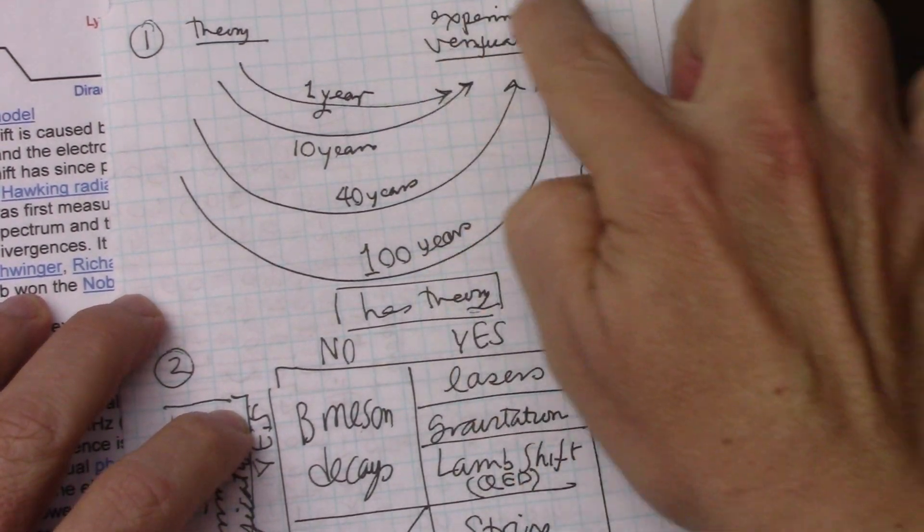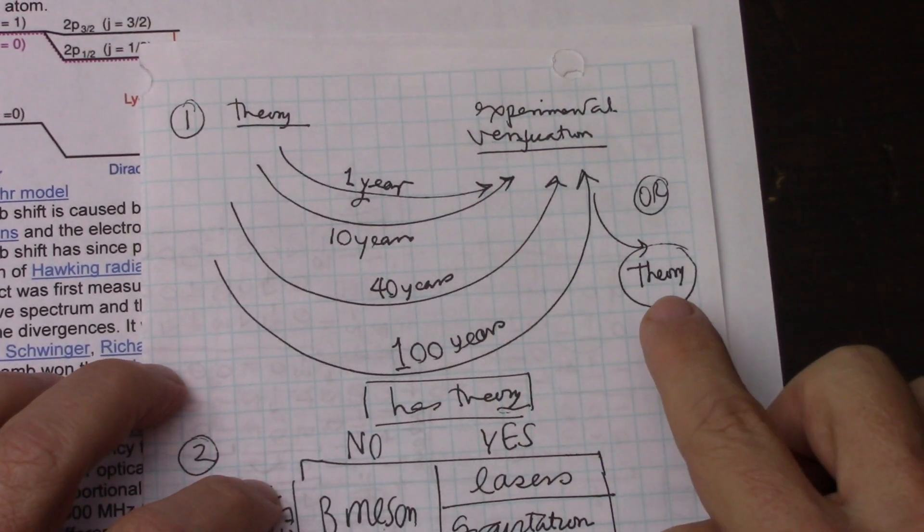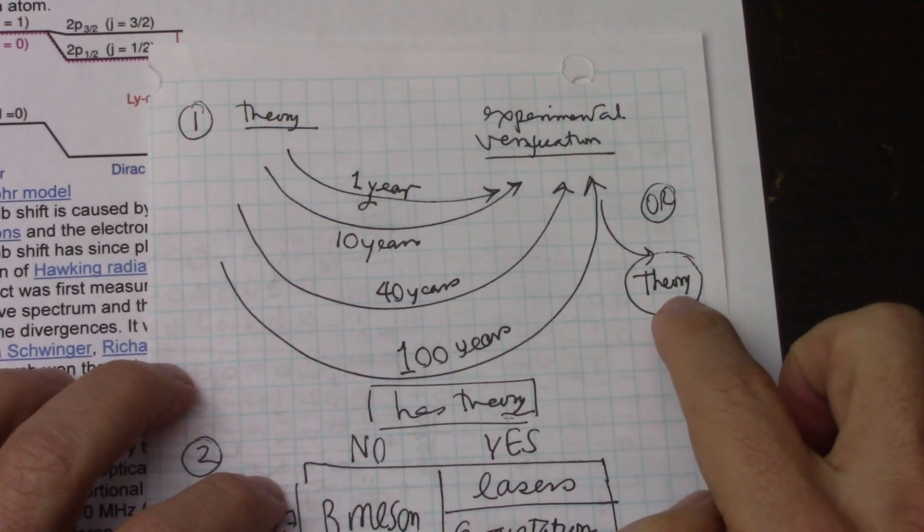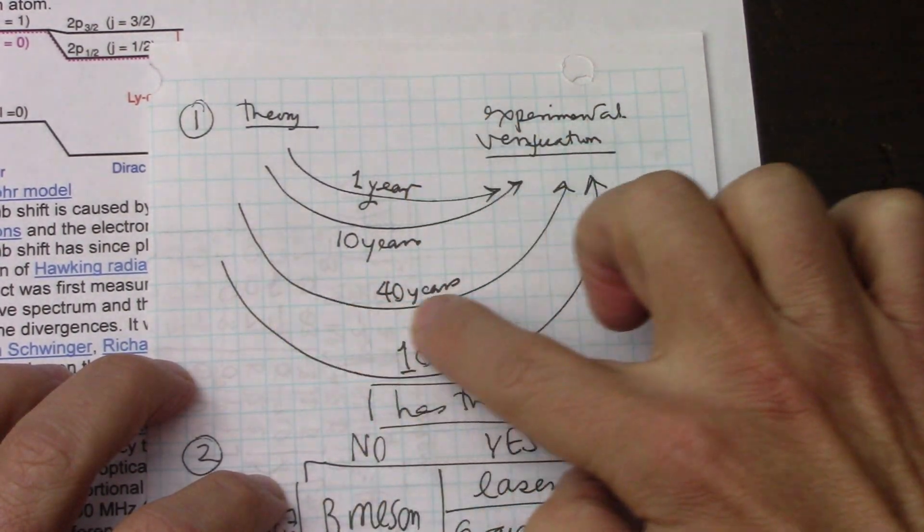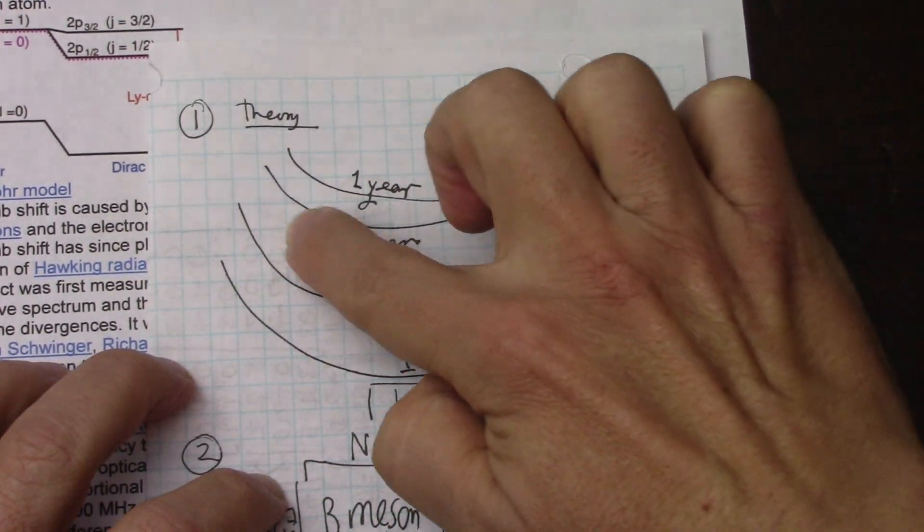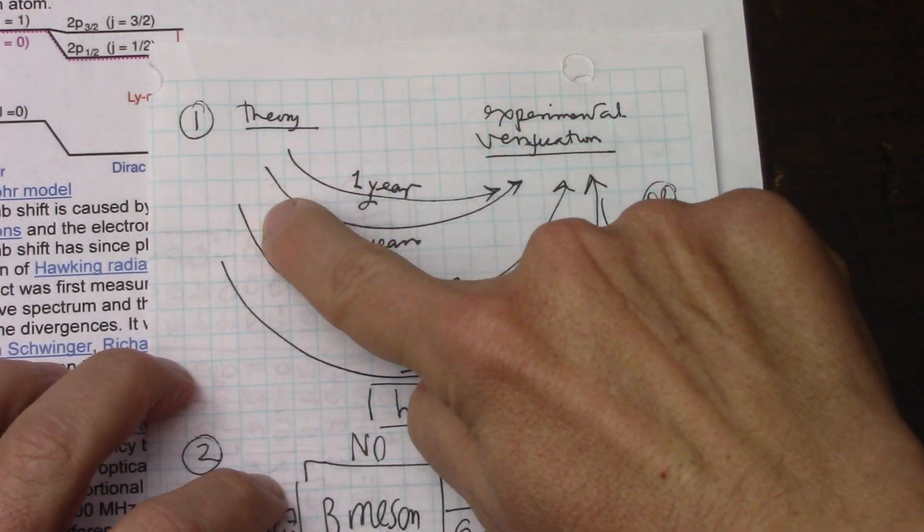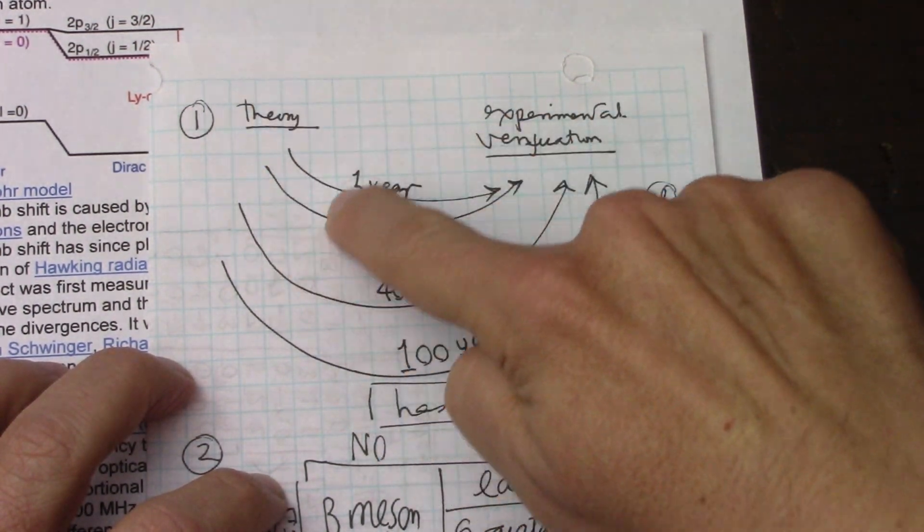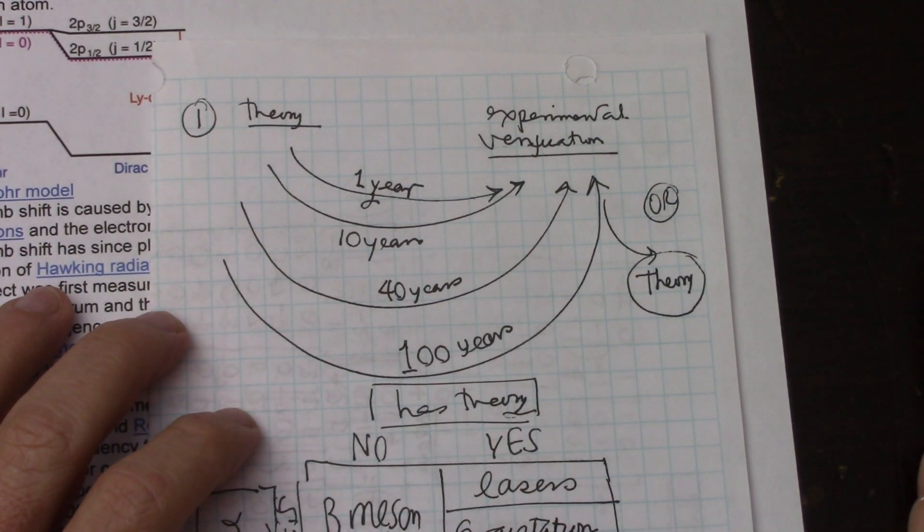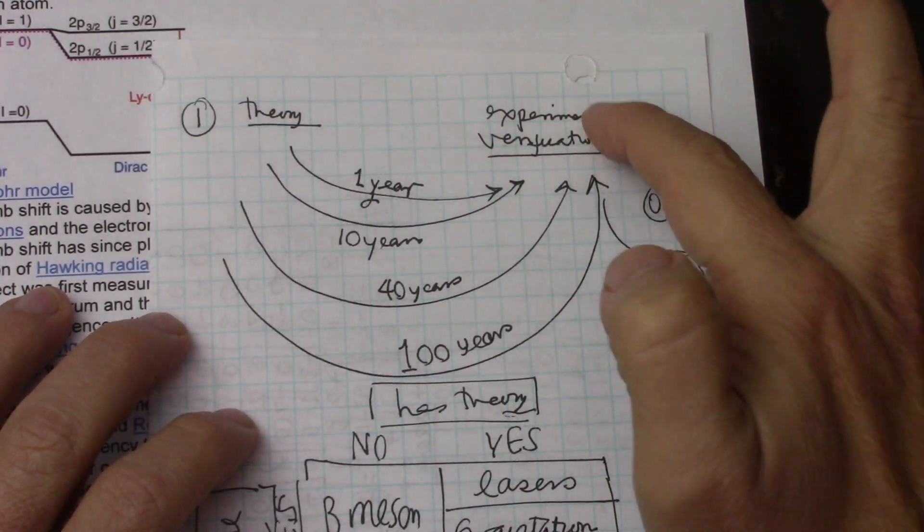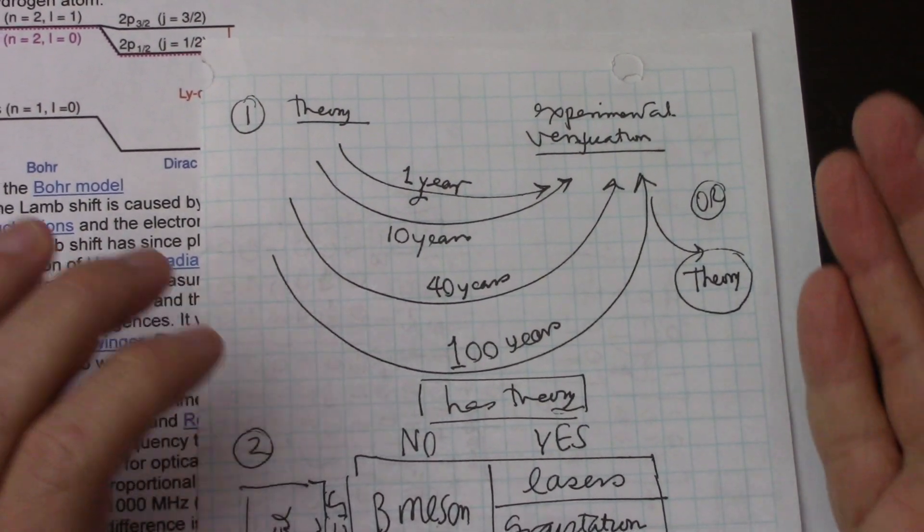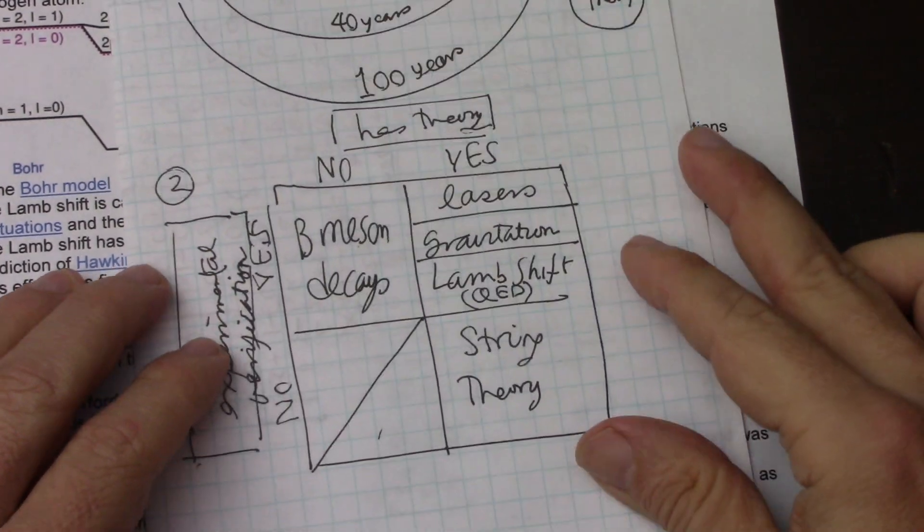And sometimes the experimental verification can happen before the theory. Now, in the case of string theory, there has been no experimental verification for something like 30, 40 years. So it's been a long time since all these people have been laboring away at this theory, and nothing that I know of has been found. So that's really point number one, just setting the stage of where string theory is.